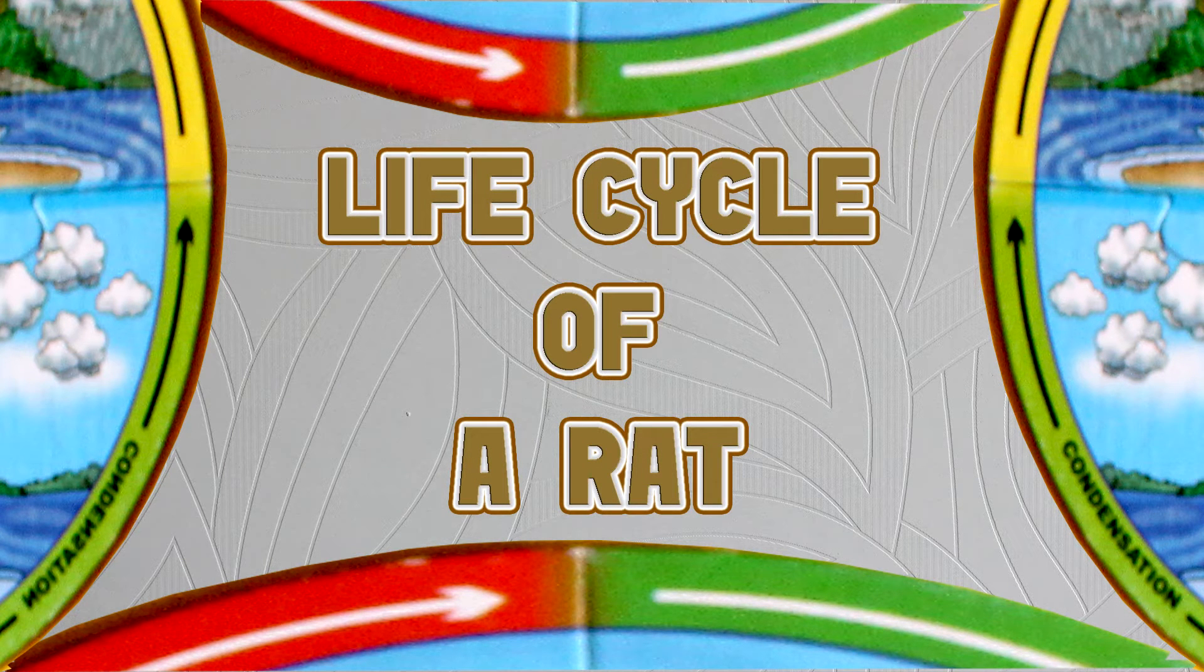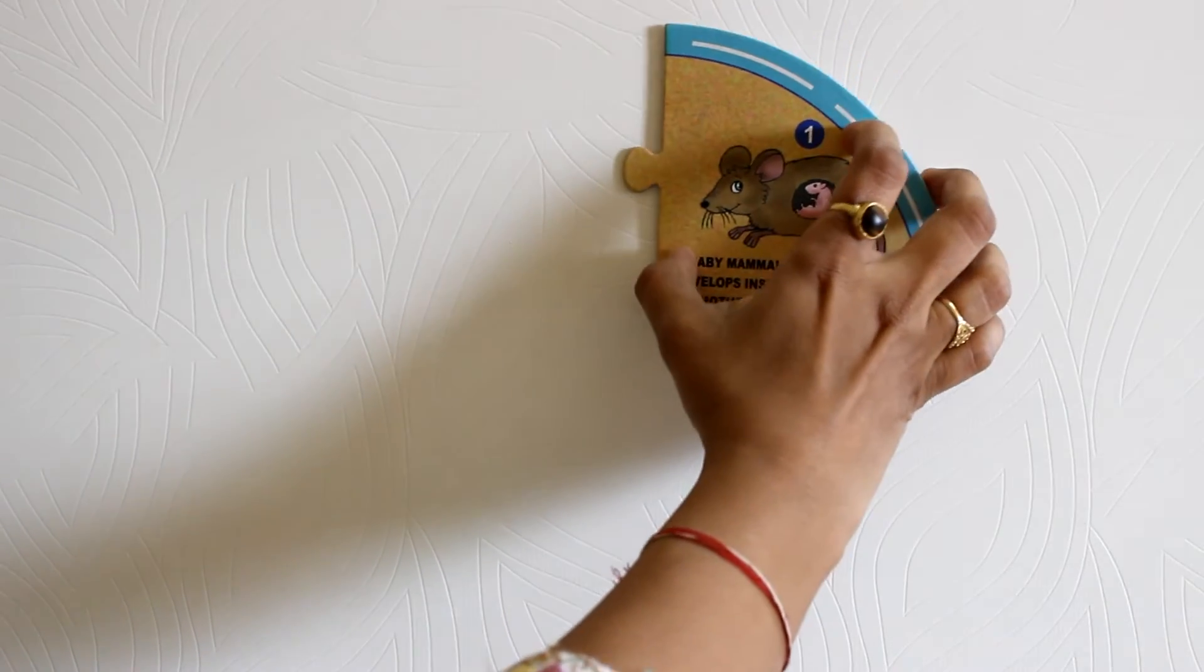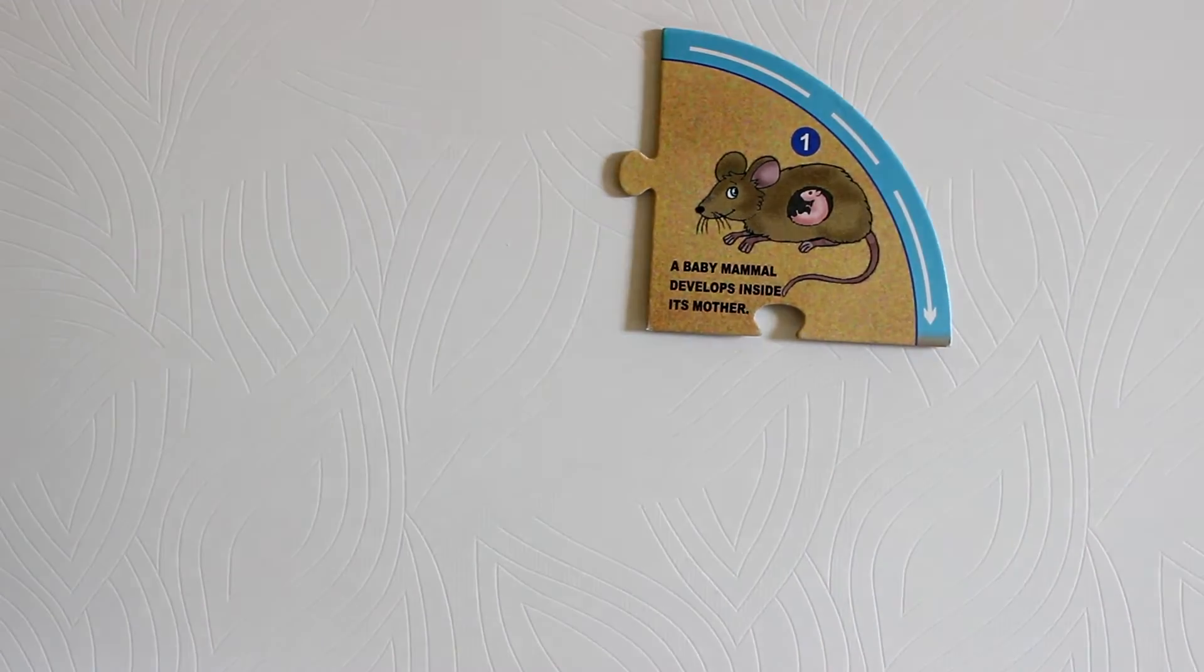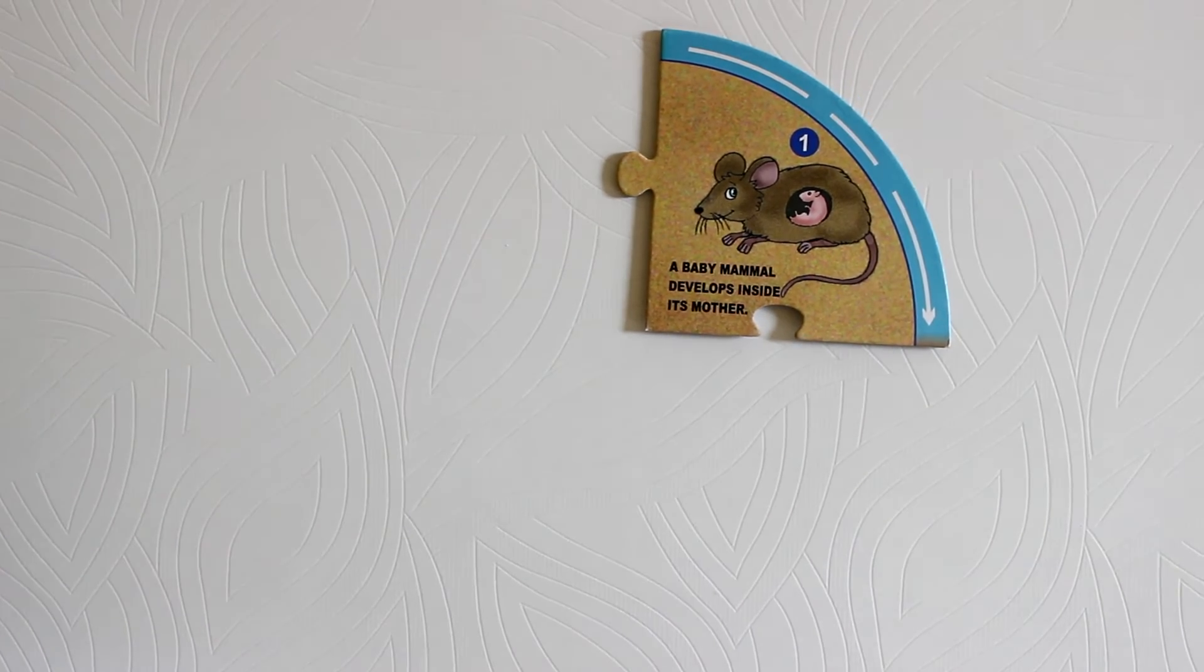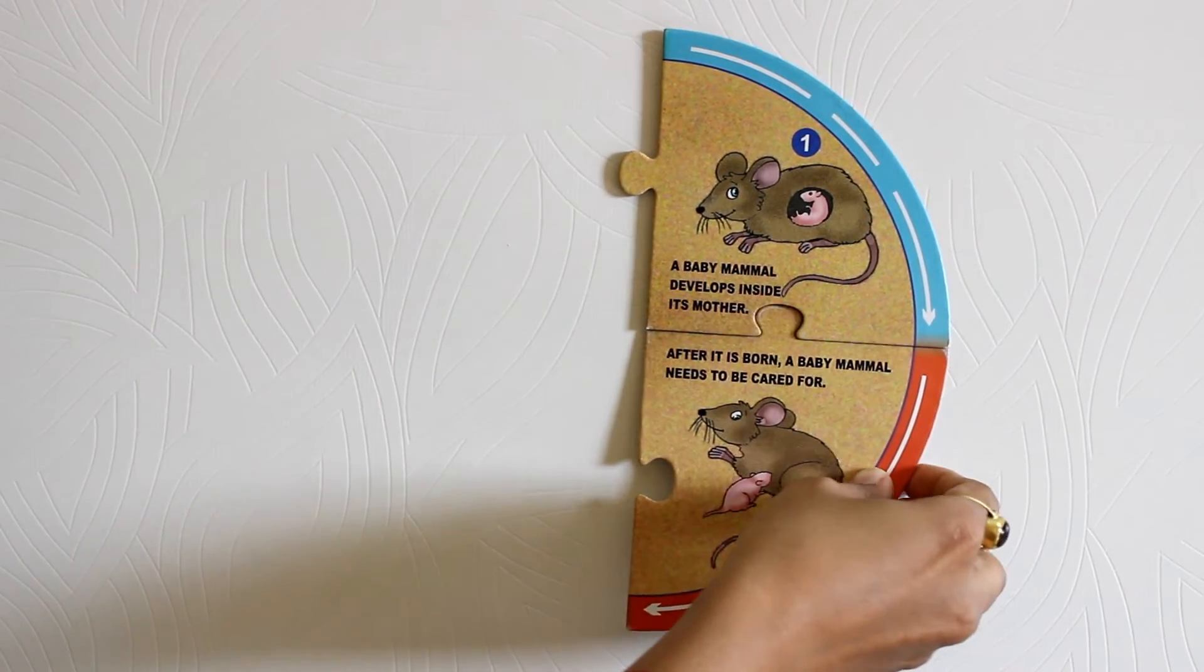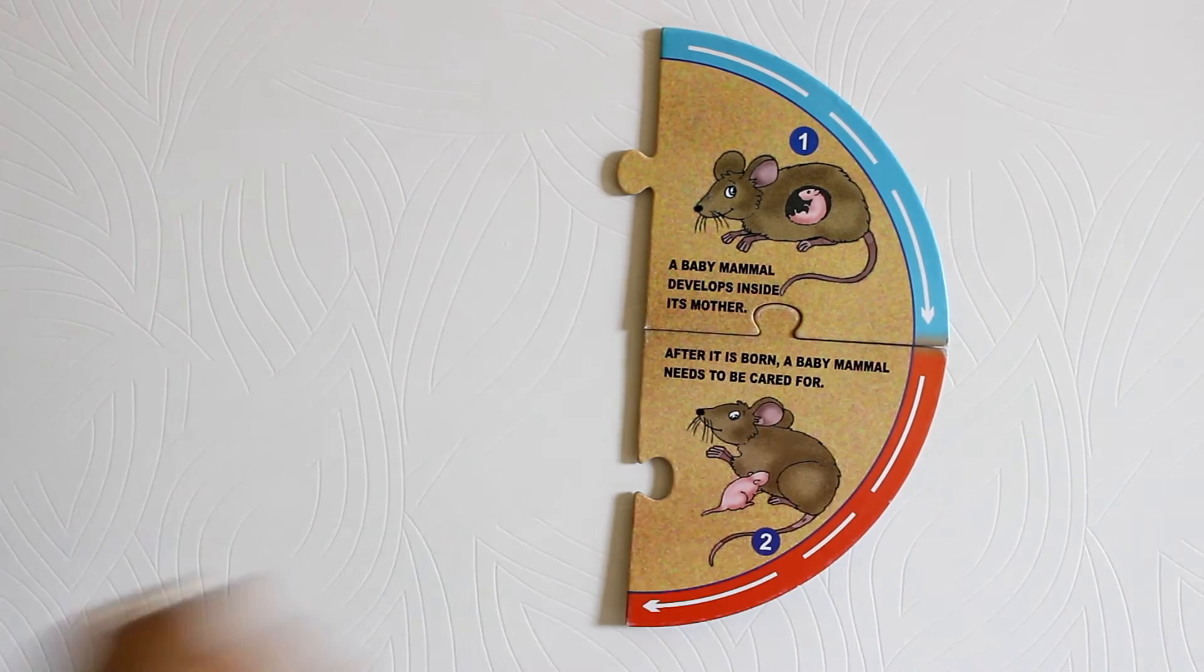This mentions the transformation that takes place in the life of a rat. Stage one: a baby mammal develops inside its mother. Stage two: after it's born, a baby mammal needs to be taken care of.